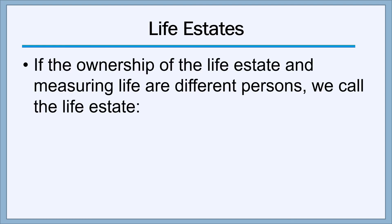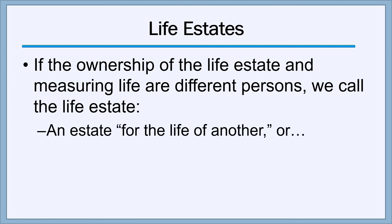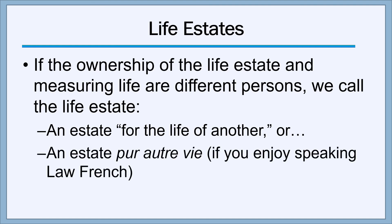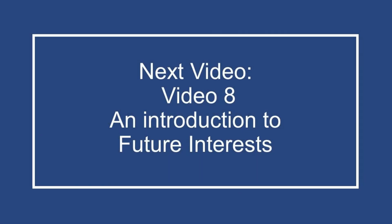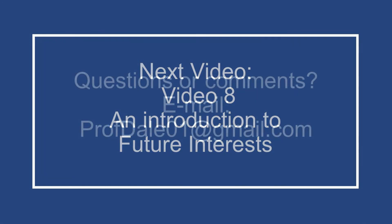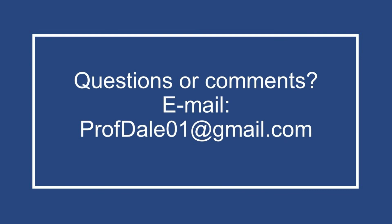We'll wind up by talking about a terminological issue with life estates. If the ownership of the life estate and the measuring life are different people, we have a couple of names for the life estate. The standard English way of expressing it is simply that it's an 'estate for the life of another.' But if you like to speak law French, you can use the law French terminology from the early English common law: it's called an 'estate per autre vie,' which is simply French for 'estate for the life of another.' And that's the end of our discussion of life estates. In our next video, video 8, we'll provide an introduction to the wonderful topic of future interests. If you have questions or comments, email profdale01@gmail.com.